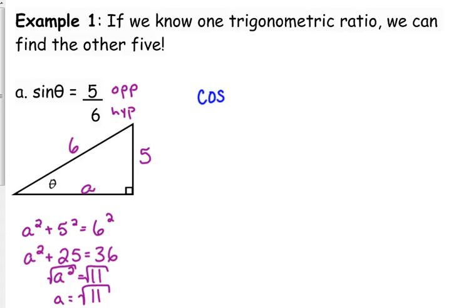So cosine is the adjacent, square root of 11, over the hypotenuse, 6. Tangent is the opposite over the adjacent, 5 over square root of 11. Now we'll talk more about this later, but usually we do not leave square roots in the denominator of a fraction.